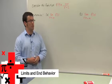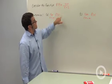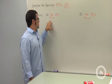I want to talk about limits and end behavior for functions. Let's take a look at a function f of x equals 10x over x minus 2. What happens as x goes to infinity?